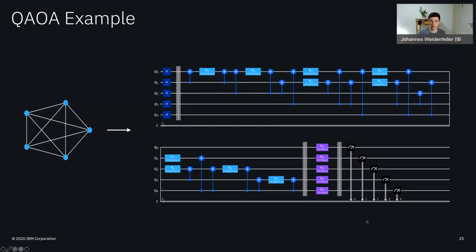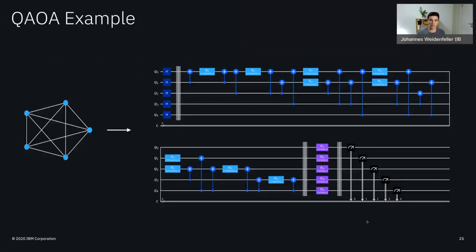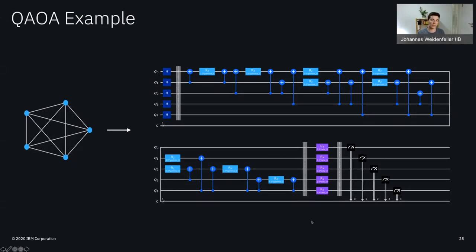The QAOA circuit is layerized — what was shown was depth P=1, but we can add as many layers as desired. Each layer is parameterized by one gamma and one beta parameter. So if the full QAOA has depth P — meaning the two layers are applied P times total — the total number of parameters to optimize equals 2P. For a quick overview of the complete optimization process: we start with a QAOA circuit for a given problem Hamiltonian and initial parameters theta, run the circuit on a quantum computer, and get bit string samples corresponding to cuts for our max cut problem. We evaluate the cut values, take their mean as the cost function for parameters theta, then feed this to a classical optimizer which updates parameters and calls the quantum circuit again.